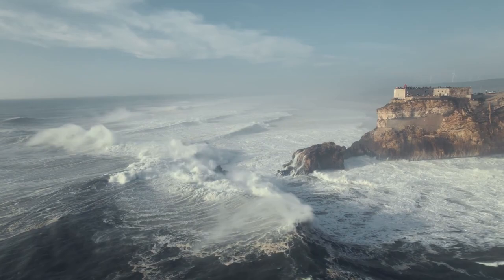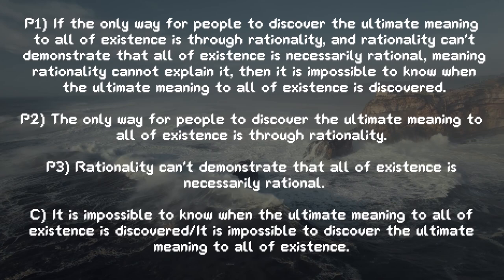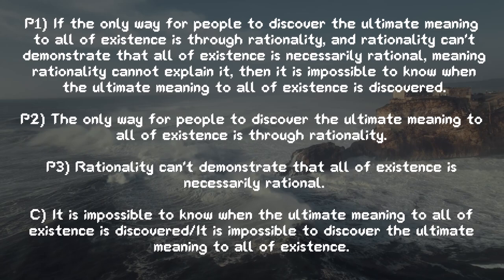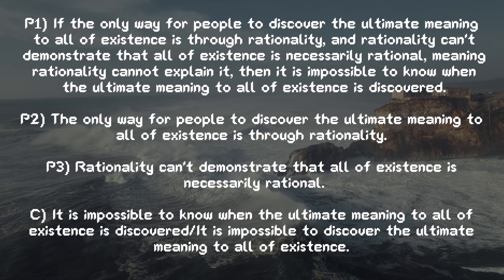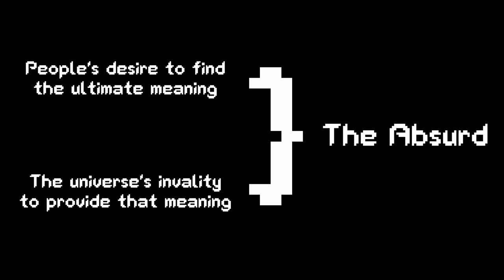Here, I can offer a rough formalization and steel man of his argument. If the only way for people to discover the ultimate meaning to all of existence is through rationality, and rationality can't demonstrate that all of existence is necessarily rational, meaning rationality cannot explain it, then it is impossible to know when the ultimate meaning to all of existence is discovered. Since Camus took both of the premises to be true, it couldn't help but follow that we can never know for sure that we have found the ultimate meaning of life. And, since people will strive for it anyway, the absurd is created, which is a relationship between the two.